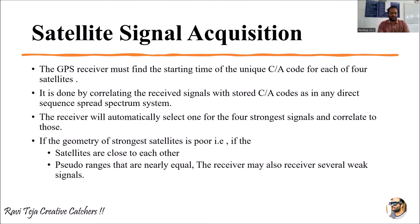The receiver will automatically select one of the four strongest signals and correlate to those. There will be several satellite signals received by the GPS receiver, and the receiver will automatically select any one strongest signal from among the four satellites.